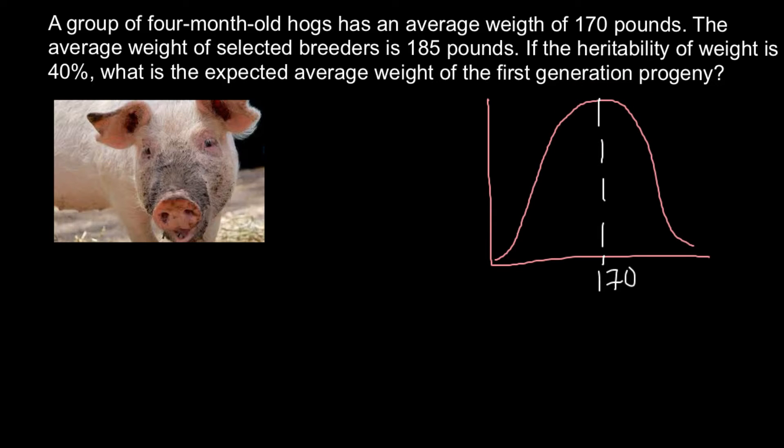And for our breeding program, of course we would be interested in the animals that are going to be here, say between 170 and 200 pounds. Here would be 140 pounds. So of course we would be interested in this group of animals that would weigh between 170 and 200, and the average here would be about here. And this is going to be 185. According to our problem, the average weight of selected breeders is 185 pounds. So it doesn't mean that all of them are 185 pounds. This is the average.